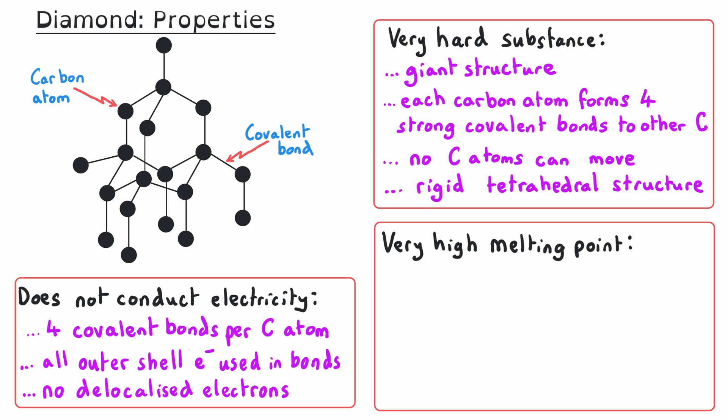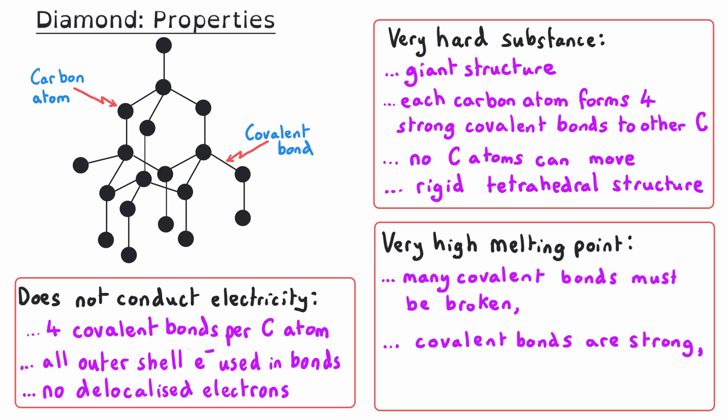The third property of diamond is that it has a very high melting point. Unlike simple molecules, where you need to overcome the forces between molecules, giant structures contain a large number of covalent bonds that you need to break in order to separate out the atoms. Covalent bonds are very strong, so a lot of energy is required to break them, and you only have enough energy to break them at high temperatures — hence the high melting point.